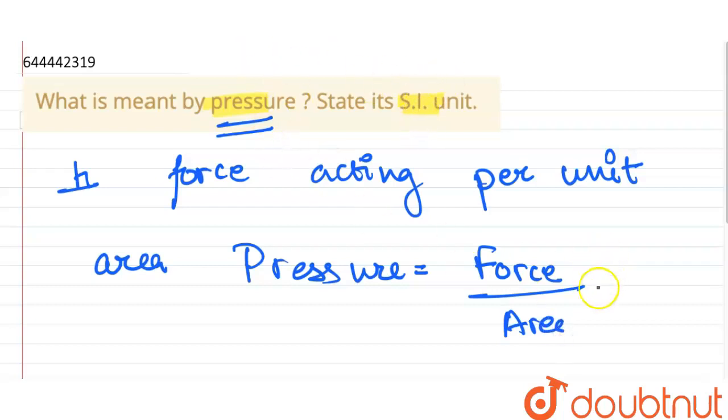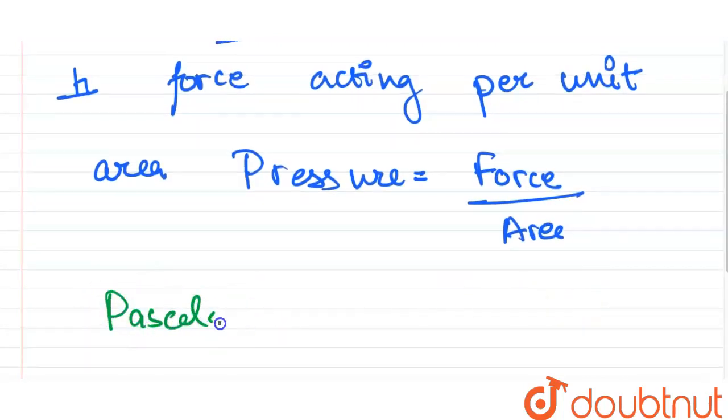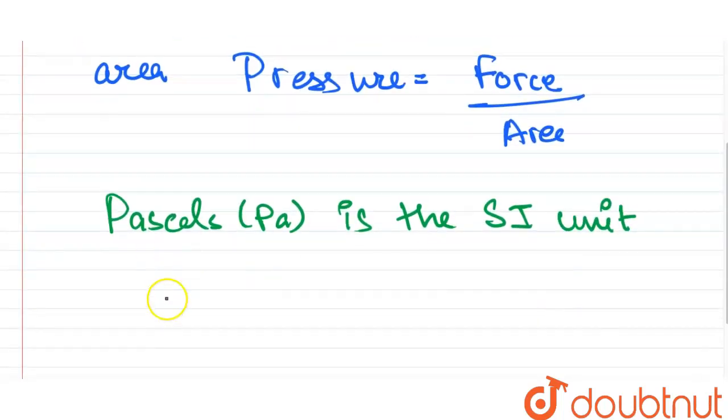So what are the SI units for pressure? We know SI unit for pressure is Pascals. Pa is the SI unit for pressure.